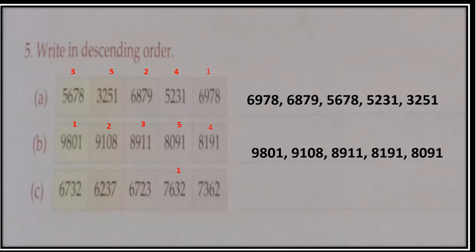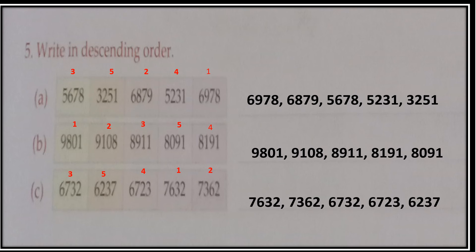Now Part C — same way. Two numbers have 7 at the thousands place; compare their hundreds: one has 6 and the other has 3, so 6 is greater — 7632 comes first, then 7362. Now compare numbers with 6 at the thousands place: two of them have 7 at hundreds and one has 2. Compare the tens place of those two with 7: one has 3 and the other has 2, so 3 is greater — so 6732 comes next, then 6723. At last comes 6237. Descending order: 7632, 7362, 6732, 6723, 6237.